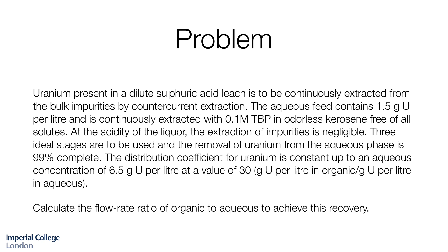The distribution coefficient for uranium is constant up to an aqueous concentration of 6.5 grams of uranium per litre, and the value of that distribution coefficient is 30. The units are grams of uranium per litre in organic phase divided by grams of uranium per litre in the aqueous phase. Although it's grams over grams so technically it's dimensionless. We are asked to calculate the flow rate ratio — the ratio of the flows of the organic to the aqueous — that's necessary to achieve this recovery of 99%.